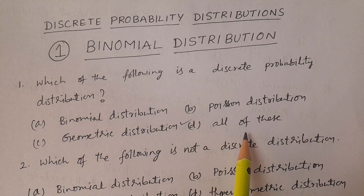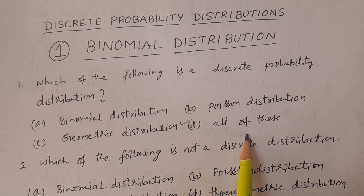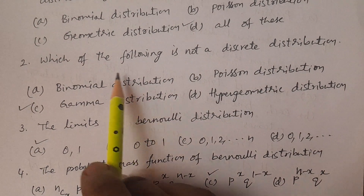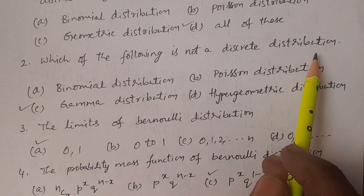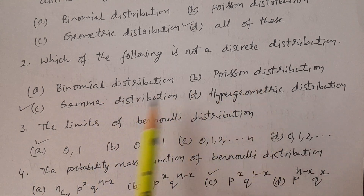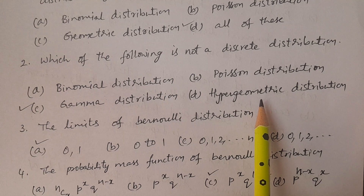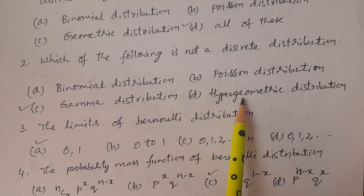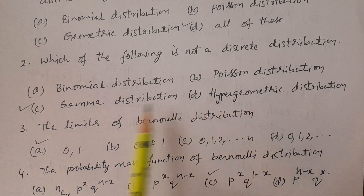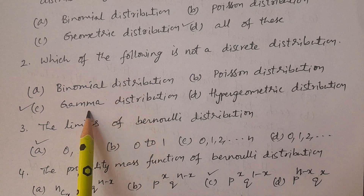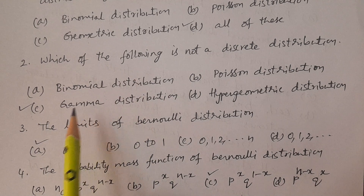Question number two: Which of the following is NOT a discrete probability distribution? Options: binomial distribution, Poisson distribution, gamma distribution, and hypergeometric distribution. The answer is gamma distribution. Binomial, Poisson, and hypergeometric are all discrete probability distributions, but gamma distribution is a continuous distribution. Therefore the answer is option C, gamma distribution.